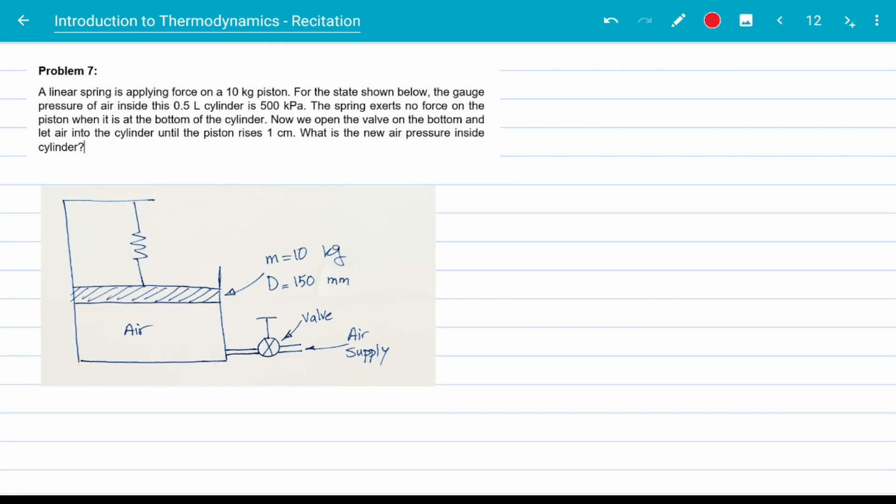This is our last problem of the day and arguably the most challenging one. The setup is similar to problem 6 with a twist. We already know the current pressure of the system, but are interested in the new pressure when the valve is opened and the piston rises 1 centimeter.